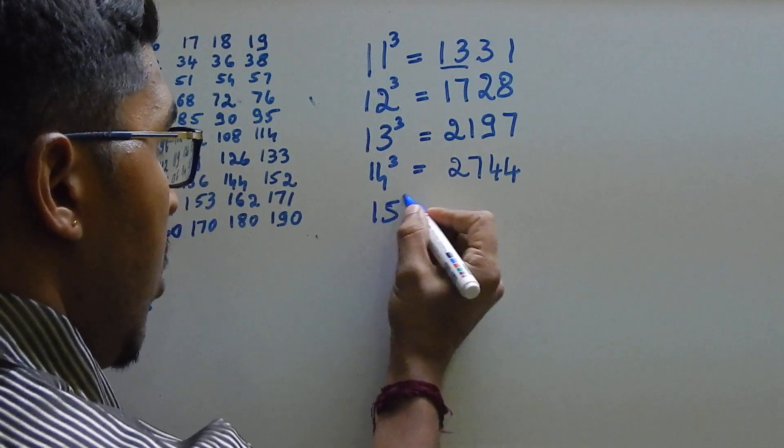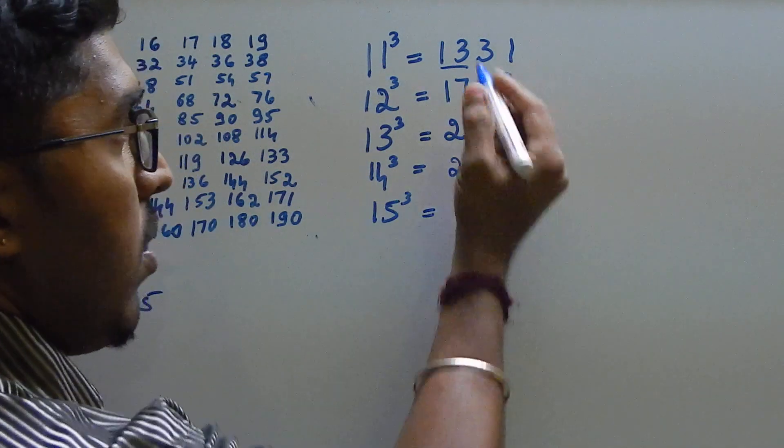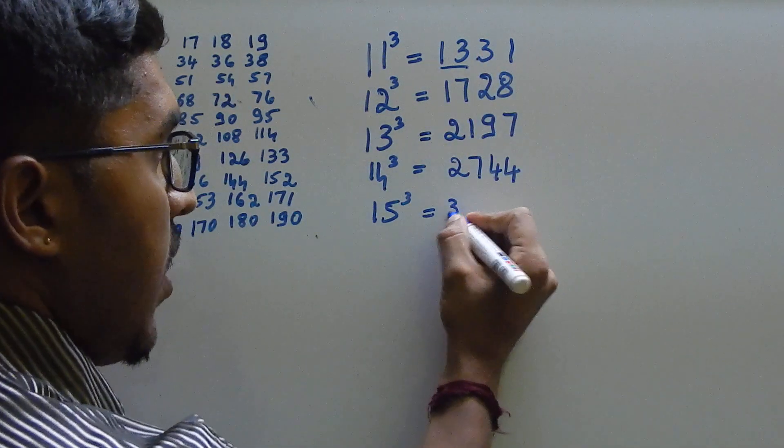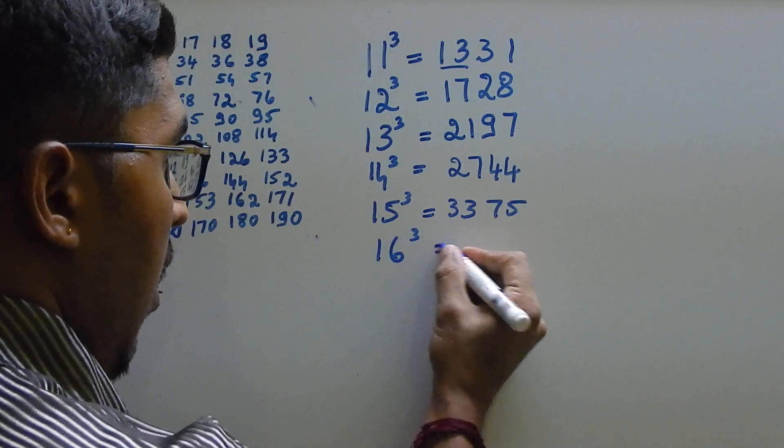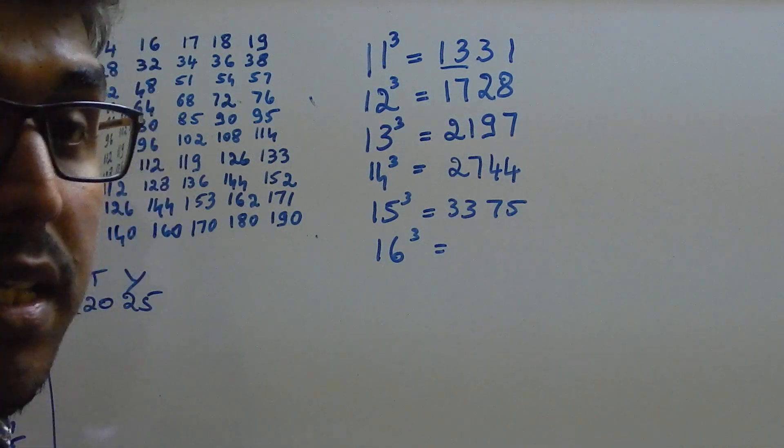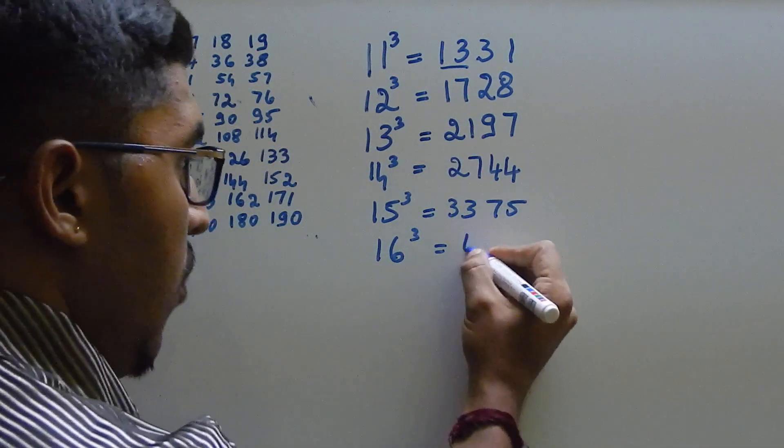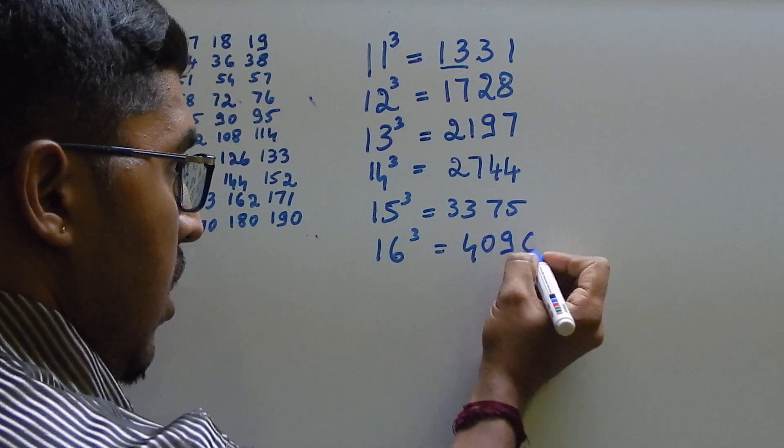Next, 15 cube. What will you do? 33. It is here. Then, 75. 16 cube. How will you write? It is famous value. 4096. Okay?